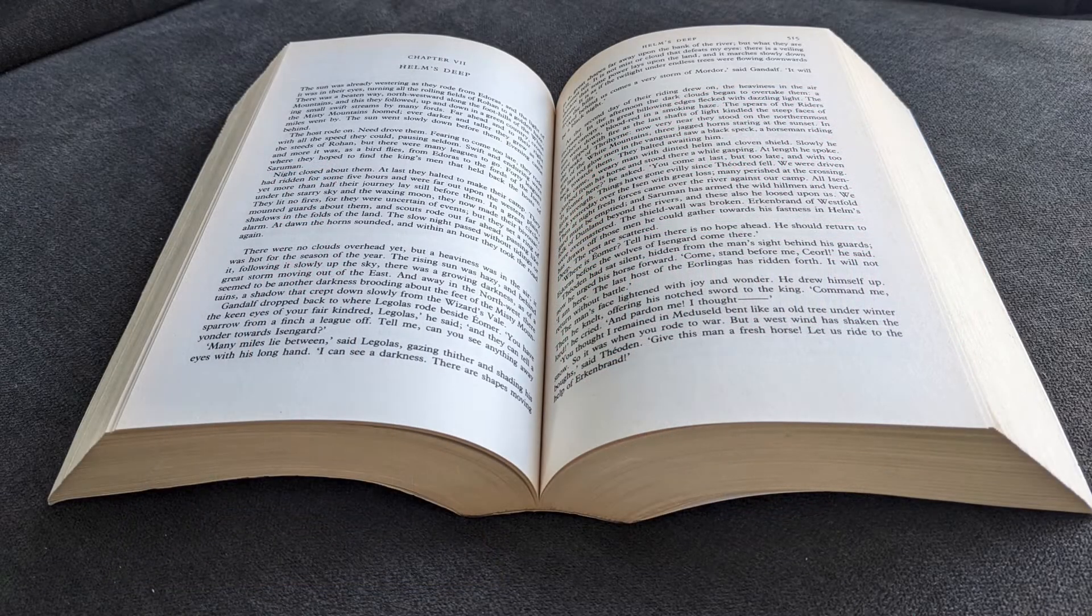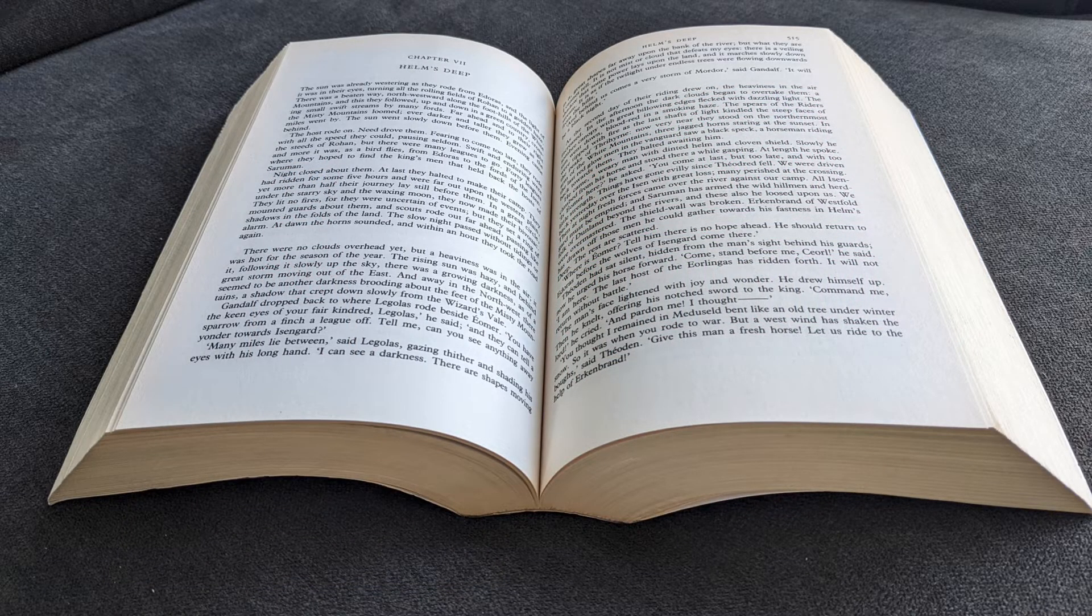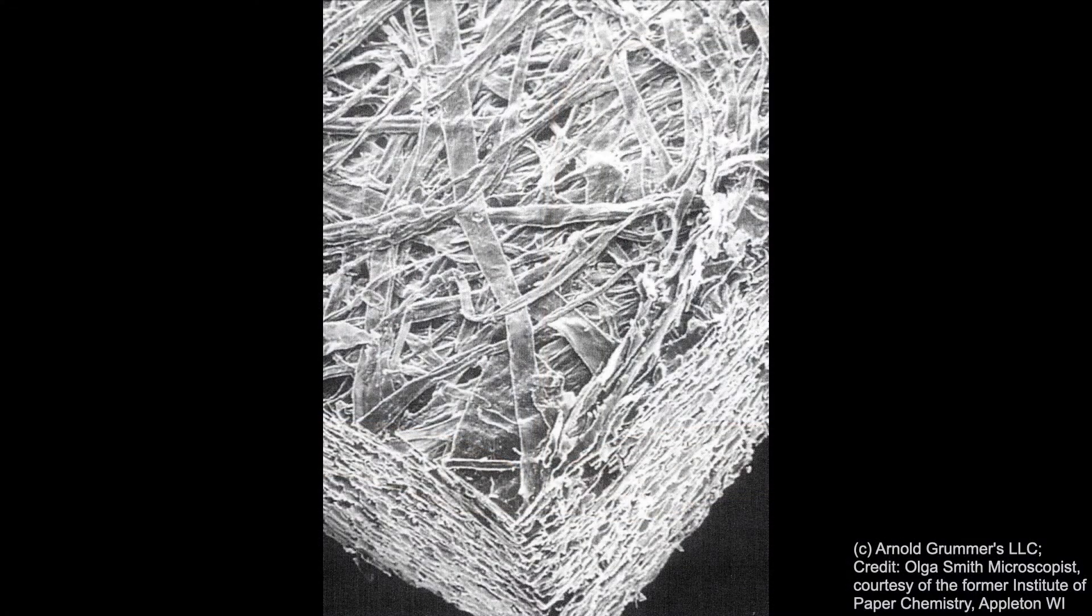But how about a piece of paper? How does it reflect light? Let's take a look under a microscope. This is what paper looks like magnified 300 times under a scanning electron microscope.